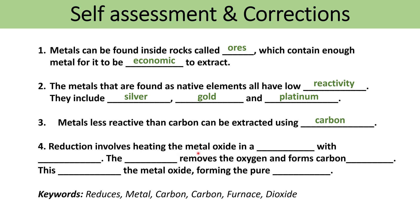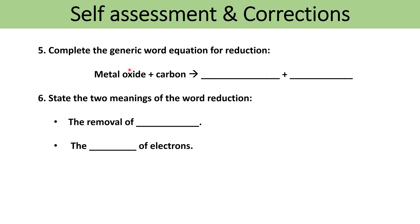Reduction involves heating the metal oxide in a furnace with carbon. The carbon is able to remove the oxygen, forming carbon dioxide, and this reduces the metal to form the pure metal. The generic word equation for reduction is: metal oxide + carbon → carbon dioxide + metal, as long as the metal is less reactive than carbon. The two meanings of the word reduction are the removal of oxygen, or the gain of electrons.